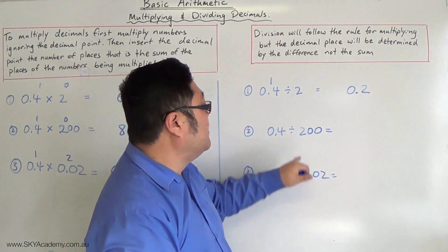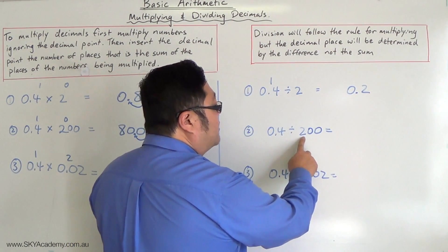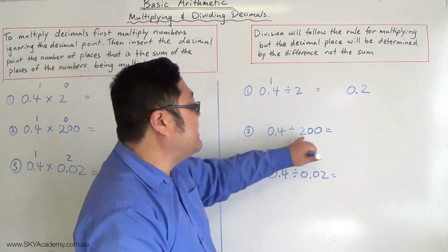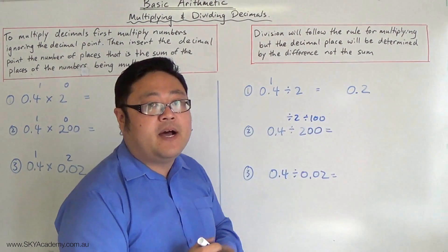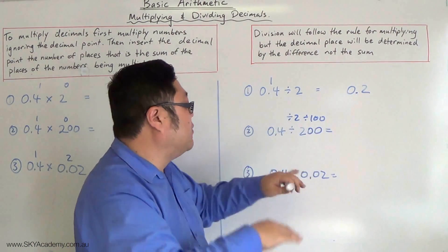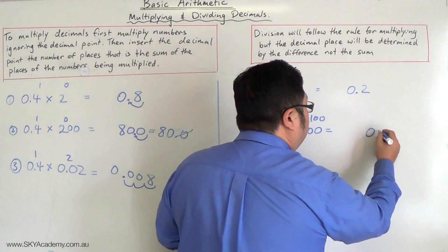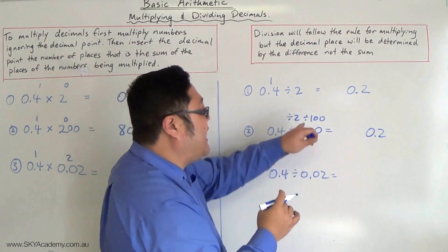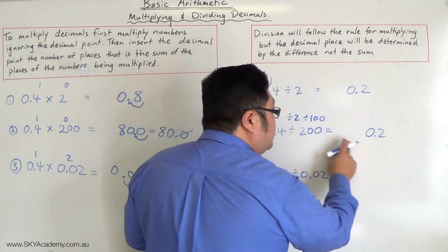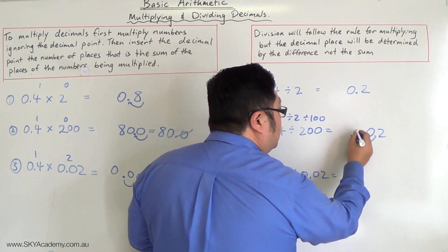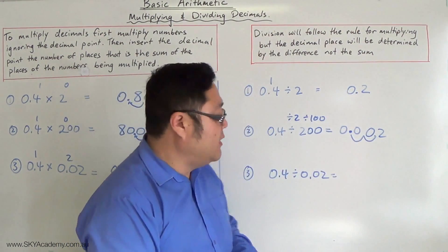When dividing by 200, notice you're dividing by 2 and also by 100. When you divide by 100 you're getting smaller, so you shift the decimal place making the number smaller. 0.4 divided by 2 is 0.2, and then dividing by 100 again shifts the decimal two more places — filling in placeholders with zeros — making the answer 0.002.